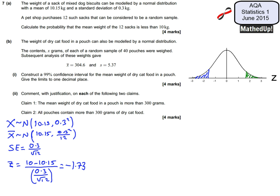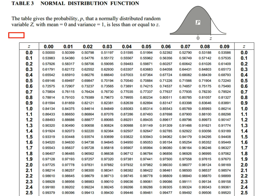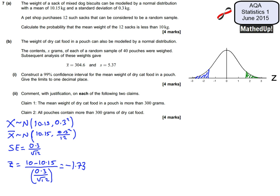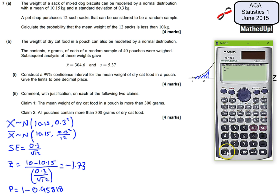To find this, I look up 1.73 in the normal distribution table, which gives 0.95818. Then I compute 1 − 0.95818, because the symmetry of the normal distribution means the left-tail area equals one minus the right-side cumulative value. That gives a probability of 0.04182.